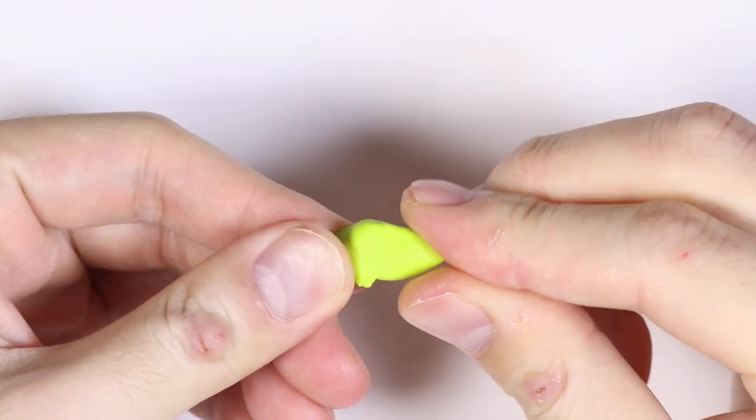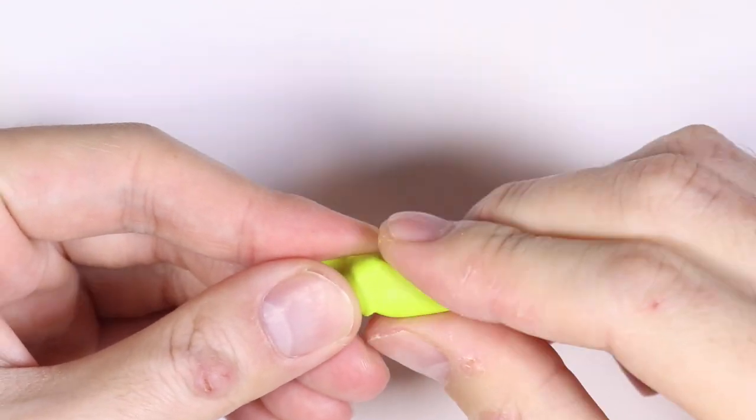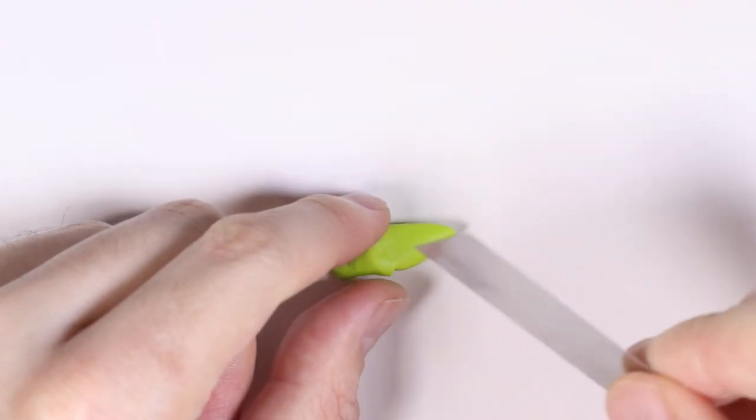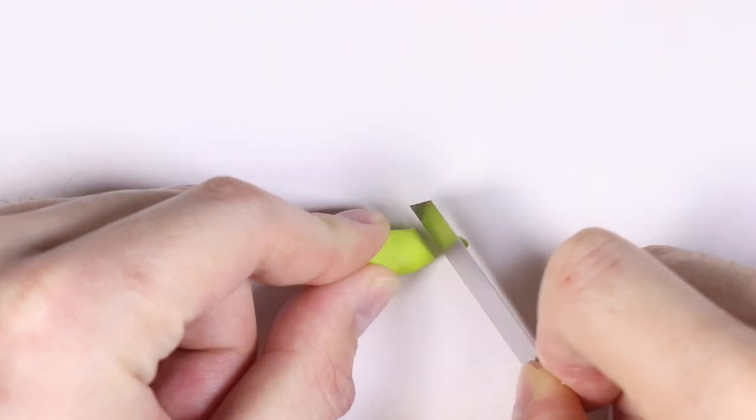Next, I'm going to take some light green clay and I'm just going to pinch it into a flattened triangle shape and cut it at a slant. This will be the little feet.